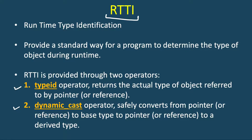The typeid operator returns the actual type of object referred to by the pointer or reference, whereas the dynamic_cast operator safely converts from a pointer or reference of base type to a pointer or reference of derived type. If the base reference or pointer is pointing to a valid object of derived type then it will allow the conversion, otherwise it will not.